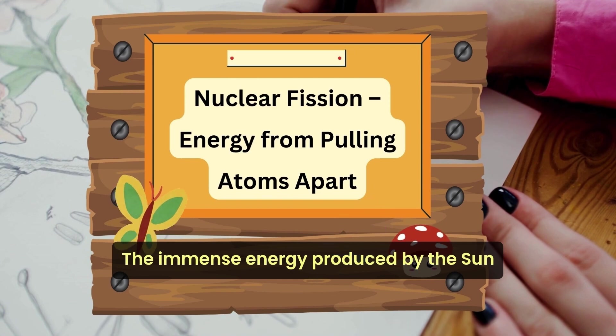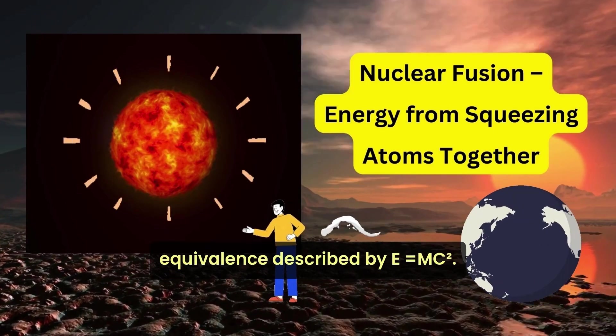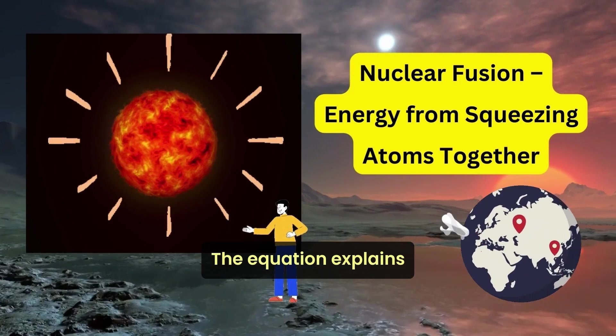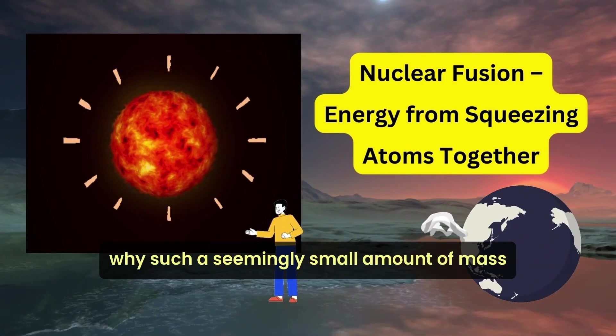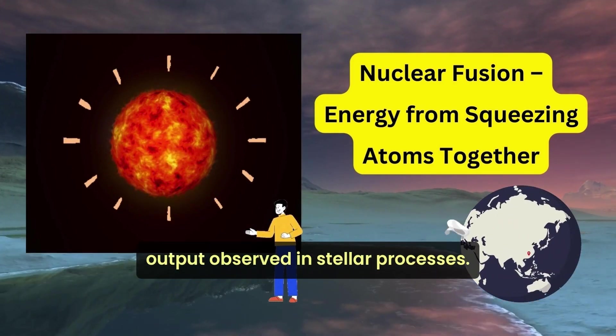The immense energy produced by the sun can be attributed to the mass-energy equivalence described by E equals mc squared. The equation explains why such a seemingly small amount of mass can result in the massive energy output observed in stellar processes.